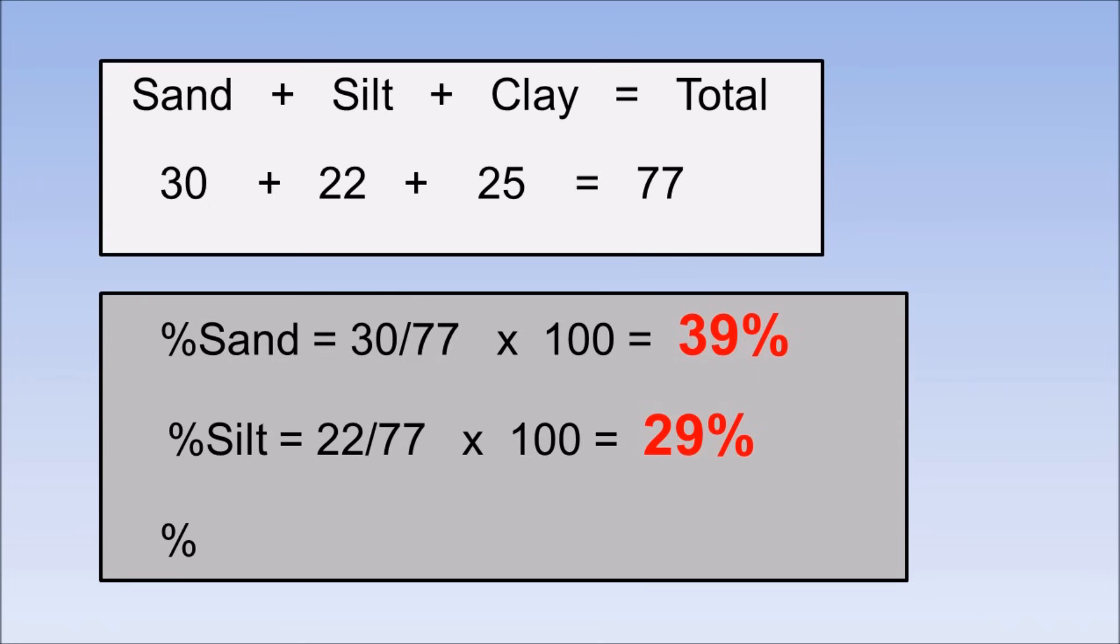Percent clay is 25 divided by 77, or 32%. You can see that the sum of the three values equals 100%.